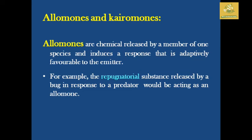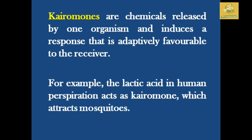Allomones are chemicals released by a member of one species that induce a response adaptively favorable to the emitter. For example, the repugnatorial substance released by a bug in response to a predator acts as an allomone. Kairomones are chemicals released by one organism that induce a response adaptively favorable to the receiver — for example, lactic acid in human perspiration acts as a kairomone attracting mosquitoes.